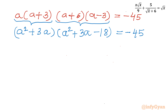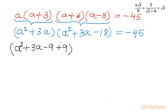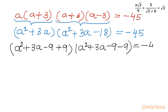Now I will use one manipulation: I will add and subtract 9, writing (a² plus 3a minus 9) and (a² plus 3a minus 9) minus 18 equal to negative 45.